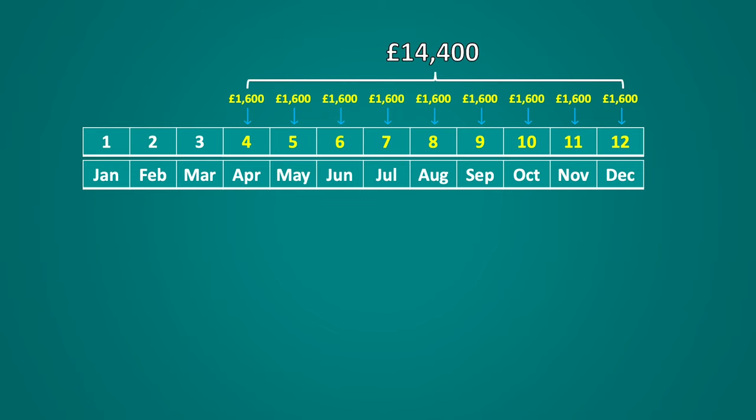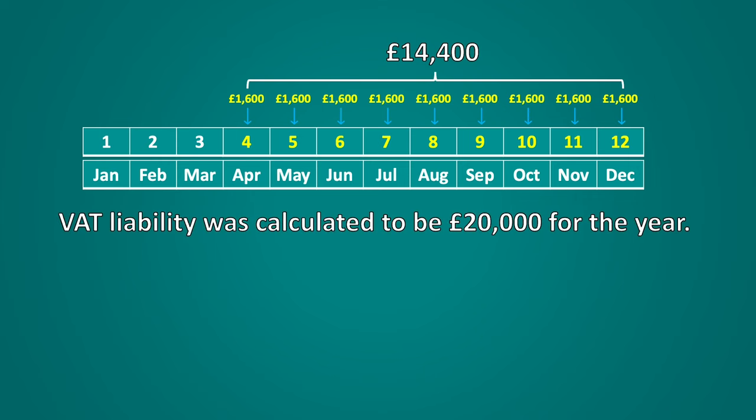The business would then calculate the VAT liability for the year and the 10th payment will be the difference between what had already been paid throughout the year and the calculated VAT liability. So for example, if the VAT liability was calculated to be £20,000 for the year, the balancing payment would be £5,600.